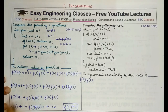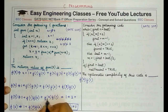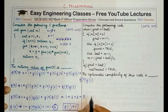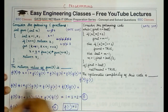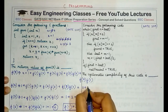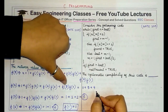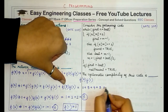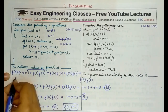For f(3): 1 plus f(1) times f(2) plus f(2) times f(1) equals 1 plus 1 times 2 plus 2 times 1, which gives 5. So f(3) equals 5. For f(4): 1 plus f(1) times f(3) plus f(2) times f(2) plus f(3) times f(1) equals 1 plus 5 plus 4 plus 5, which gives 15. So f(4) equals 15.